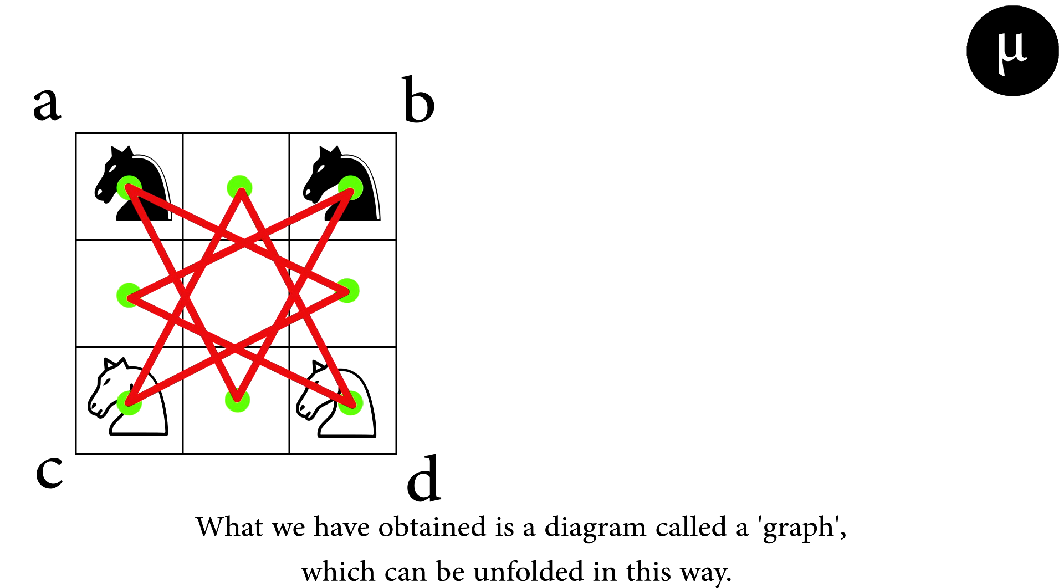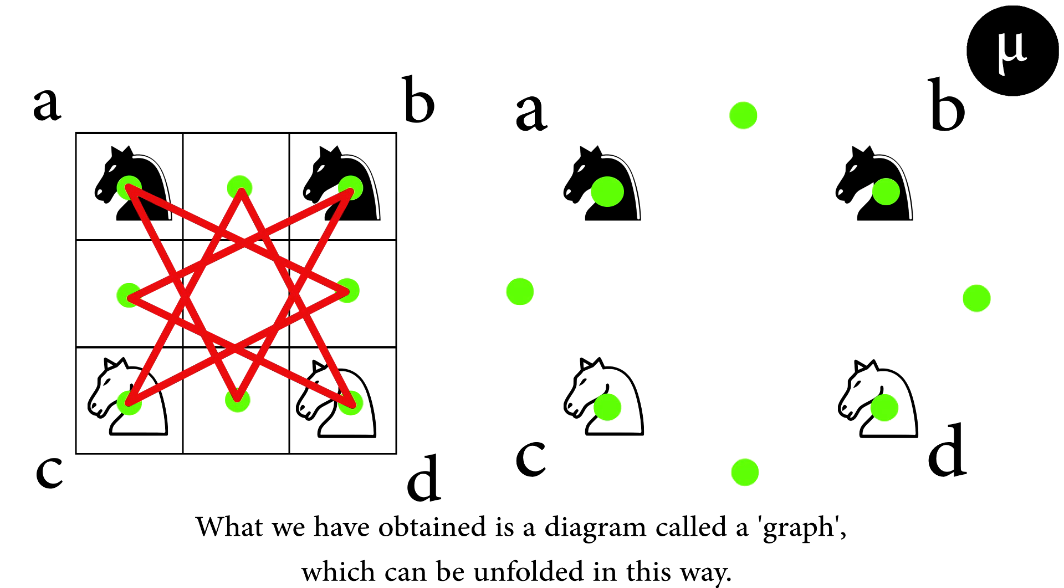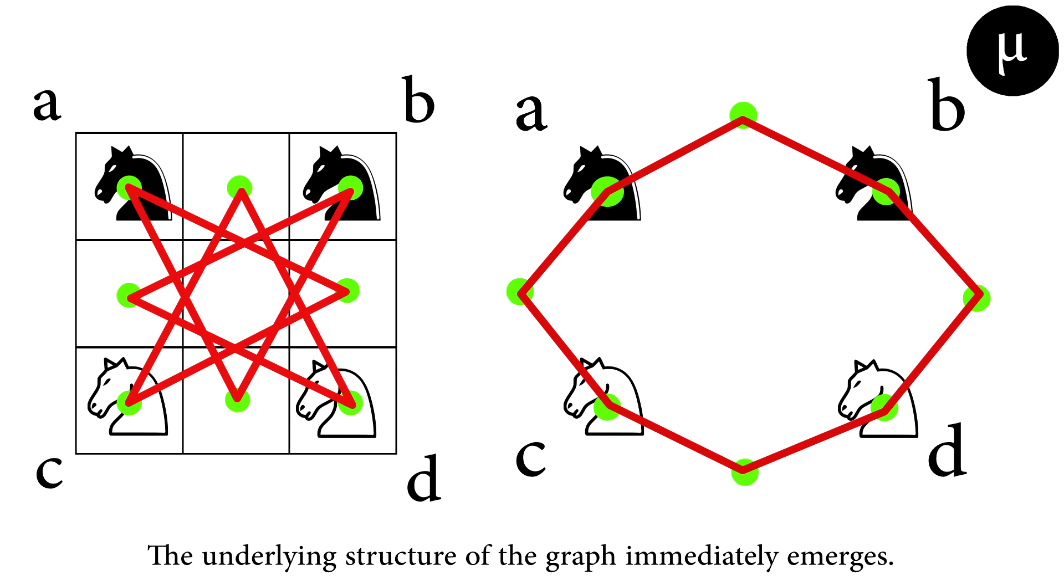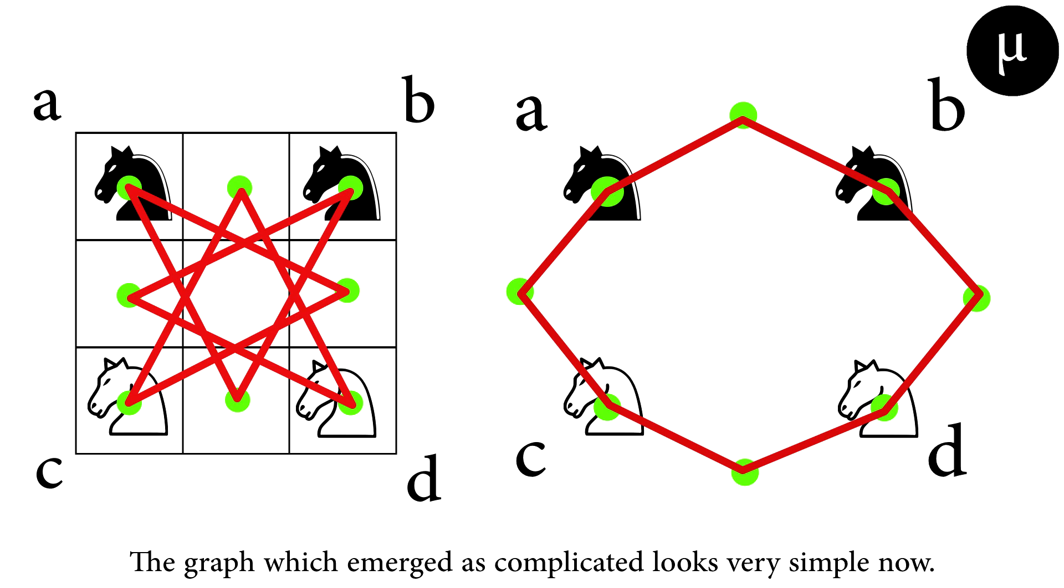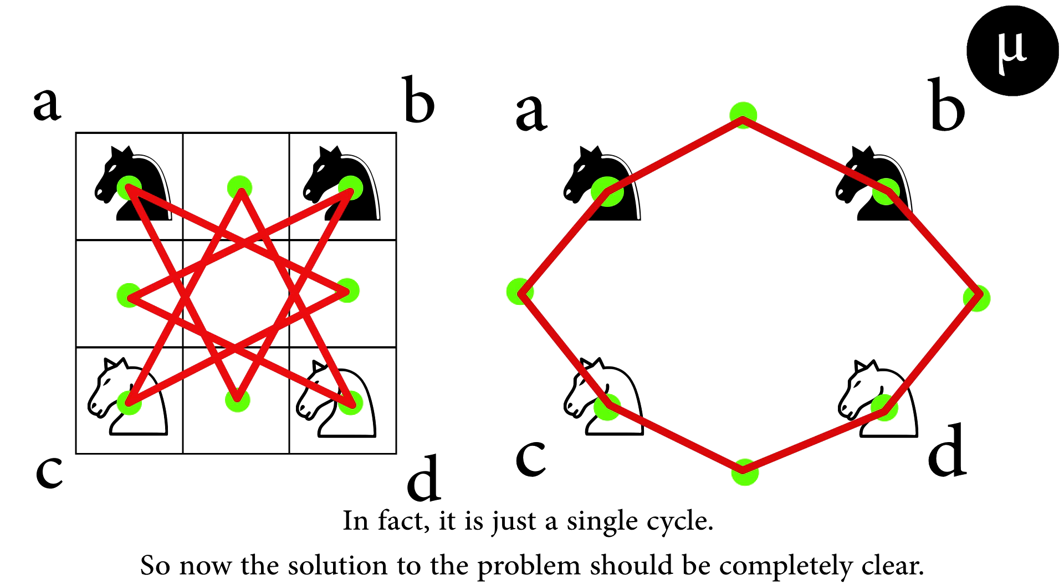What we have obtained is a diagram called a graph which can be unfolded in this way. The underlying structure of the graph immediately emerges. The graph which looked so complicated now looks very simple. In fact, it is just a single cycle.